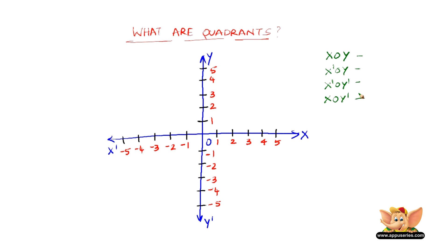So these four portions that are formed as a result of these two lines dividing the plane are called quadrants.